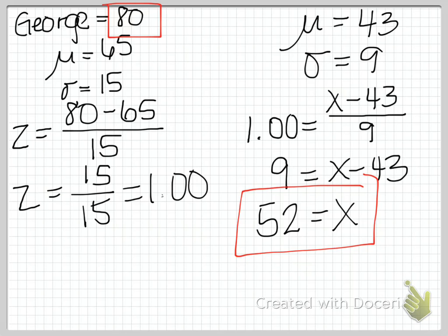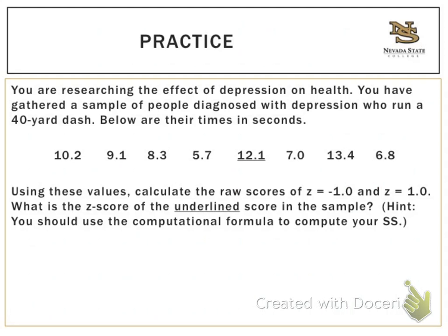Let's work on one more problem. Here we have a somewhat more complex problem. Suppose you are researching the effect of depression on health. You've gathered a sample of people who've been diagnosed with depression, and you ask them to run a 40-yard dash. You collect their time to run the 40-yard dash in seconds, and you have the data below. Using these values, calculate the raw scores at z equals negative one and z equals positive one. In addition, what is the z-score of the underlined score in the sample? In this case, that's 12.1. And I've given you a hint.